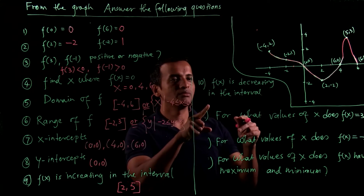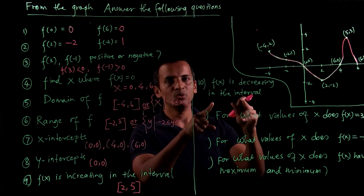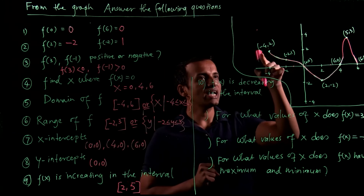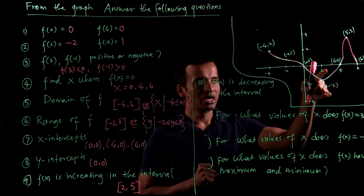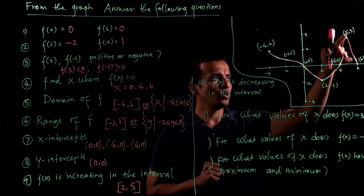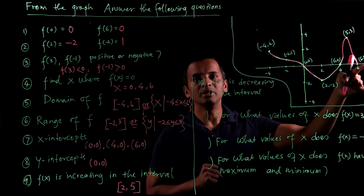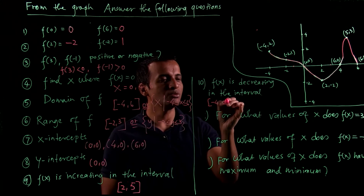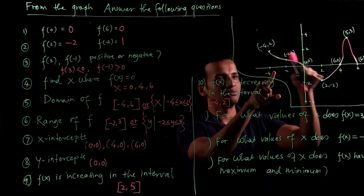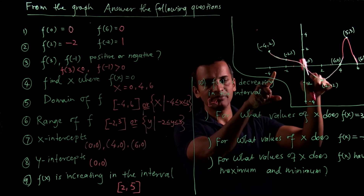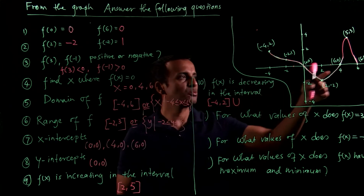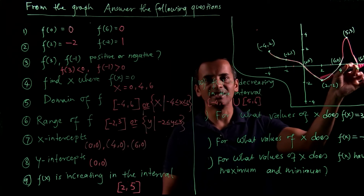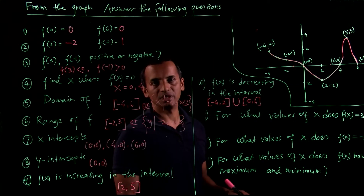Number 10 is: f(x) is decreasing in which interval? f(x) is decreasing when x is between negative 4 and positive 2, and also when x is between 5 and 6. So you write: negative 4 to positive 2, combined with 5 through 6.